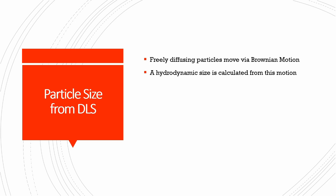Freely diffusing particles move via Brownian motion. Brownian motion is thermal motion, so anytime you're at a temperature above absolute zero — absolute zero being zero Kelvin — you have thermal motion of particles in solution or suspension just due to thermal fluctuations. It's just temperature-induced motion. So when we're doing sizing from dynamic light scattering, we're calculating a hydrodynamic size from this diffusive motion.